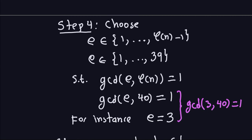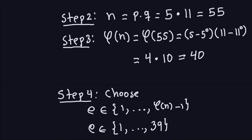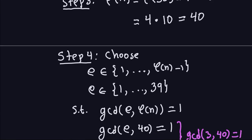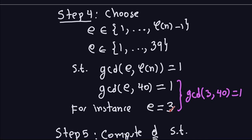We want gcd(E, 40) = 1. We can choose E = 3 — this number doesn't have to be prime, it just has to be in the collection with gcd(E, 40) = 1. Indeed gcd(3, 40) = 1 since they share no common factors. So the public key is (N, E) = (55, 3).